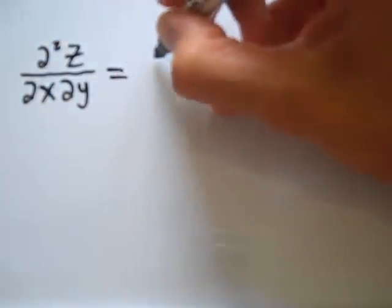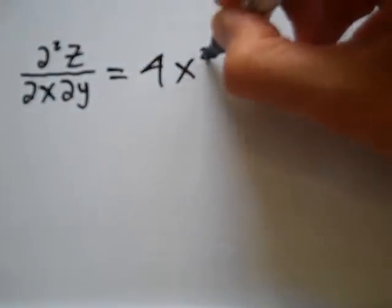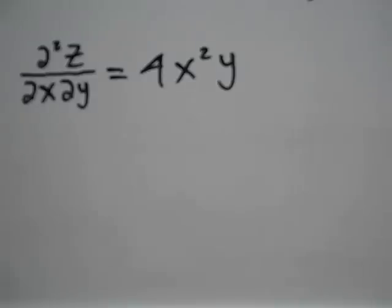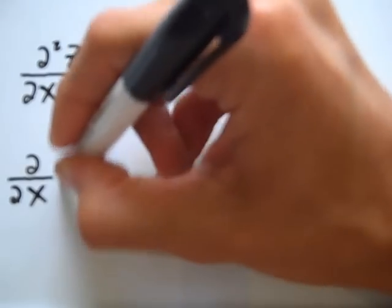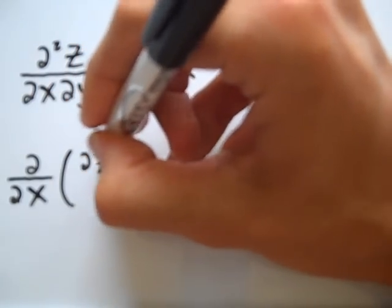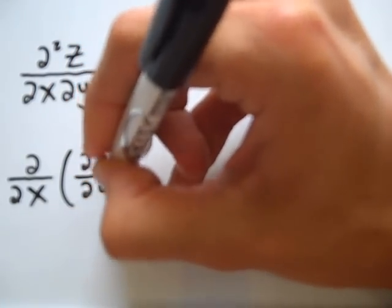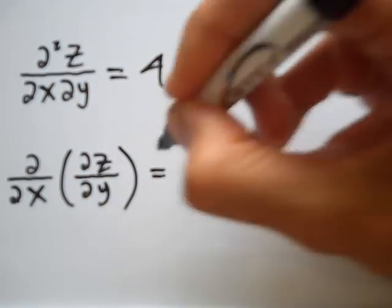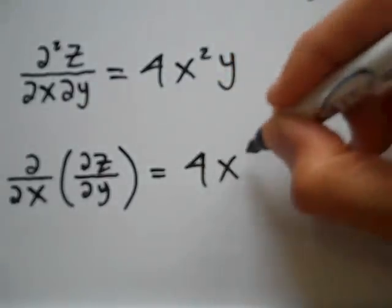Suppose I want to solve the simple partial differential equation — the partial derivative of z with respect to both x and y is equal to 4x squared y. I propose rewriting this as the partial derivative with respect to x of the partial derivative of z with respect to y being equal to 4x squared y.